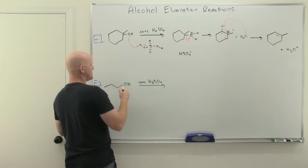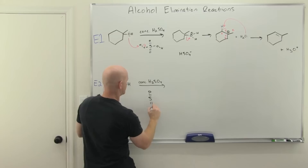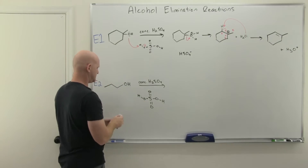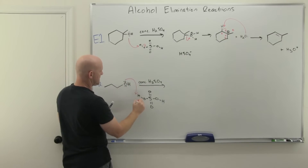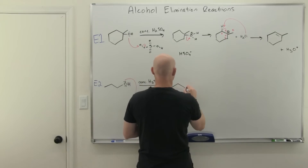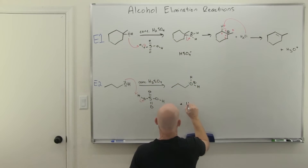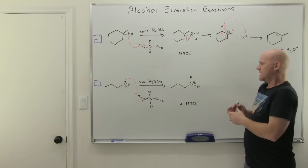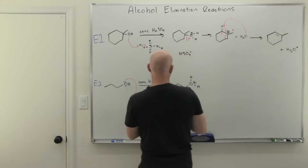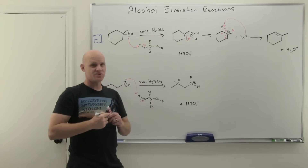You're going to have to consider what kind of alcohol you have: tertiary or secondary goes E1; primary goes E2. For the primary mechanism, first step is the same — we protonate the alcohol, turning the OH (a poor leaving group) into water (a good leaving group). For a primary, it can't leave on its own because we can't form a primary carbocation, so we're going to have to deprotonate all in the same step. With a primary, there's only one adjacent beta carbon, so we don't have to worry about Zaitsev vs. anti-Zaitsev — there's only one alkene product possible.